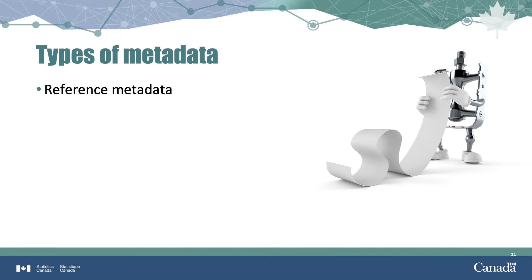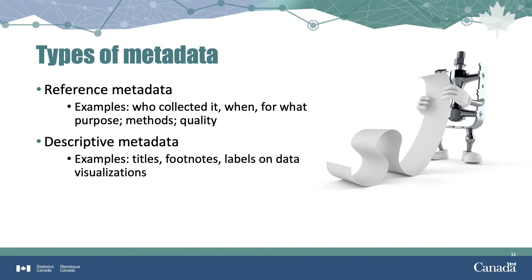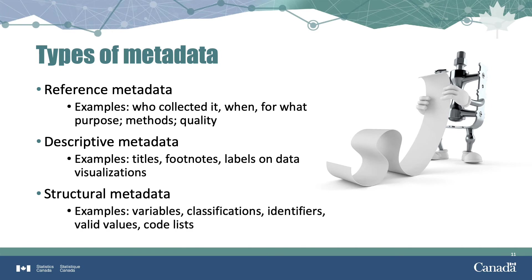There are different types of metadata. Reference metadata gives information about the source of the data, such as who collected it, when, and for what purpose. It also includes a description of the methods used to process or analyze the data and an assessment of data quality — this could be in paragraph format. Descriptive metadata includes things like titles, footnotes, and labels, which could appear directly on tables, graphs, and other data visualizations. Structural metadata is where one would find a list of what variables and classifications are in the data, what identifiers there are, what the valid values are, and the range of values or code list — a list of possible values for categorical variables. If standard classifications were used, they'd be described in the structural metadata.